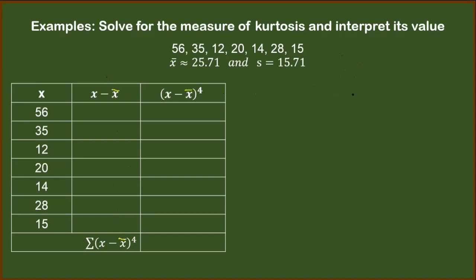We are doing this to better visualize each value and how those values will lead to the summation of score minus mean raised to the 4th power. Because this part is what we need for our formula. Let's recall the formula for kurtosis. It's equal to score minus mean to the 4th, divided by n, s to the 4th.